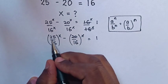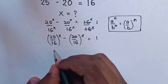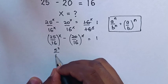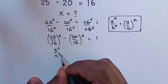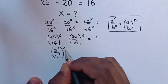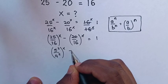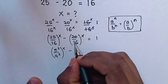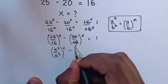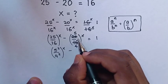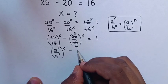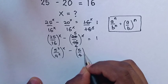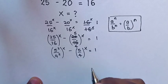Then from here, 25 is the same as 5 squared over 16, which is the same as 4 squared, bracket power x. For 20 over 16, simplifying by 4 gives 5 over 4, so it will be (5 over 4) bracket power x is equal to 1.